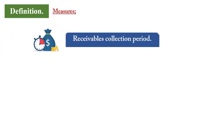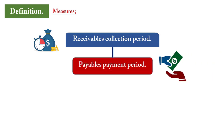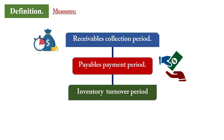When measuring efficiency, we look at three key ratios: the receivables collection period — how long it takes to collect money from credit customers; the payables payment period — how long it takes to pay suppliers bought from on credit; and the inventory turnover period — how long it takes for purchased inventory to be sold, either into receivables or into cash.